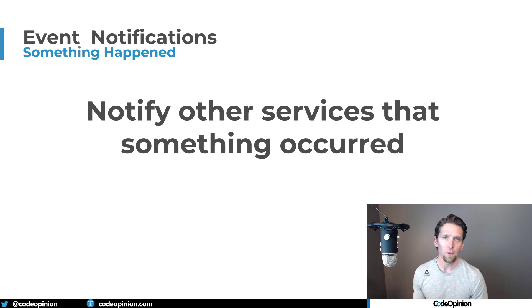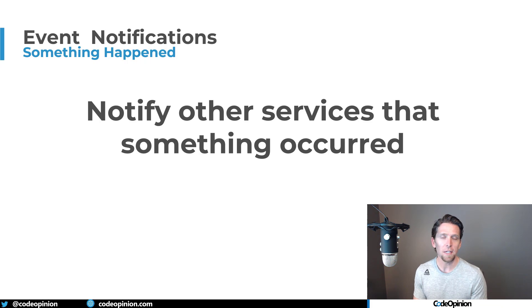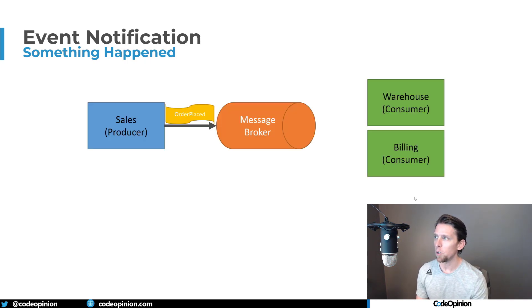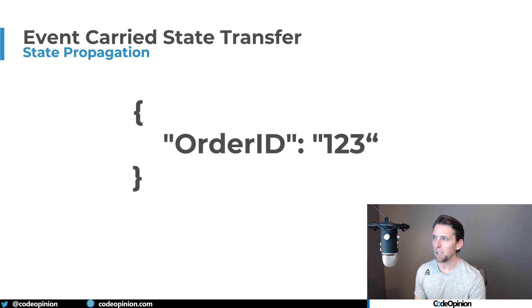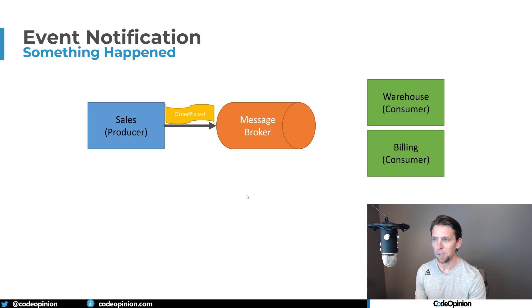The last type is events for notifications, which is related to what I was just talking about with event-carried state transfer. The idea with events for notification purposes is you're just trying to tell other parts of the system that something happened. Usually the contents of the event are very slim — just identifiers, not necessarily any actual state. So for example, if an order was placed in sales, that event might just contain order ID 123, and that's what gets sent to the message broker.